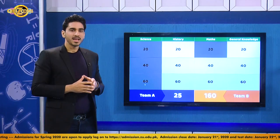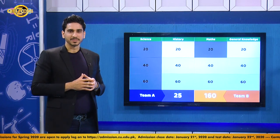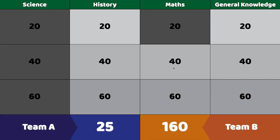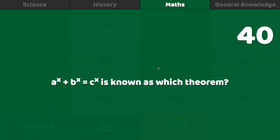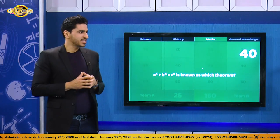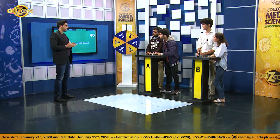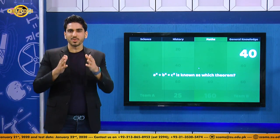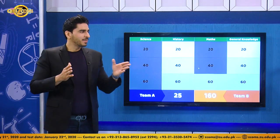Team B chooses maths for 40. The question: a to the power of x plus b to the power of x equals c to the power of x — this is known as which theorem? Team A buzzes first and answers Fermat's theorem. The host confirms that is the right answer, noting it's pronounced Fermat's theorem. Well done, Team A.